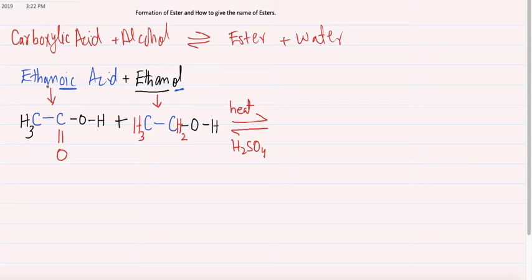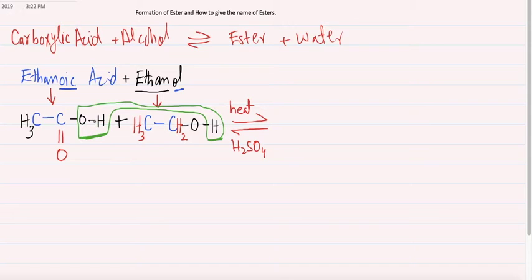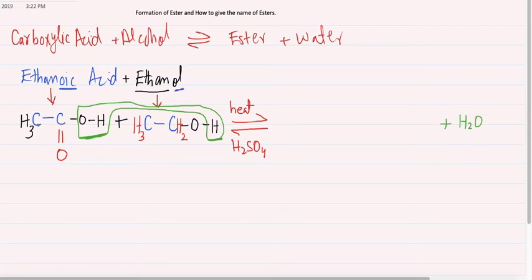When we mix ethanoic acid with ethanol, the OH group from the carboxylic acid and the H group from the alcohol will make water. So from here, H from the alcohol and OH from the carboxylic acid will eliminate and water is formed. The first product is water and the second would be ester. We start to write the formula of ester — first we write CH3, then C double bond O.